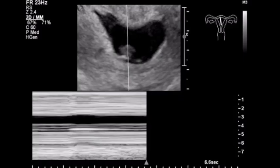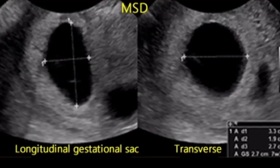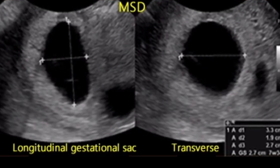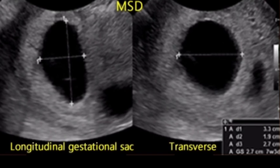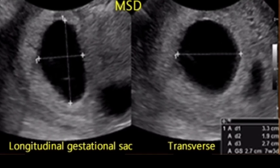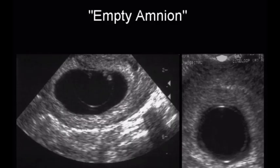9. Crown rump length of less than 7 mm and no heartbeat. 10. Mean sac diameter of 16 to 24 mm and no embryo. 12. Absence of embryo greater than or equal to 6 weeks after last menstrual period. 13. Absence of embryo when amnion is seen adjacent to yolk sac — the empty amnion sign.